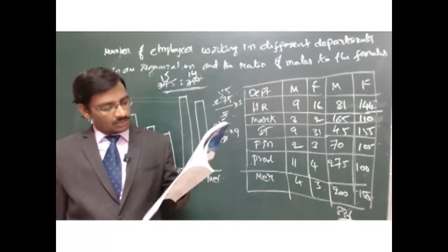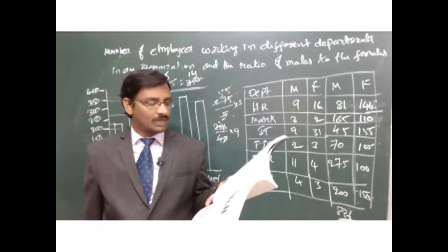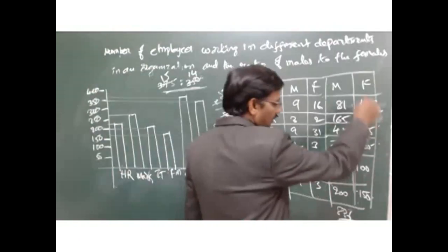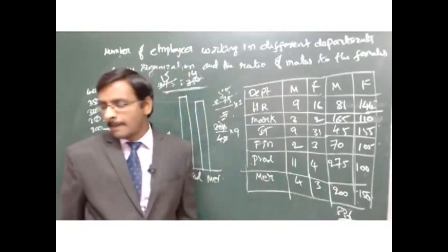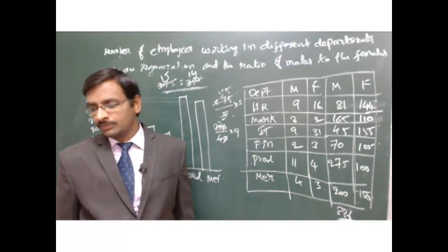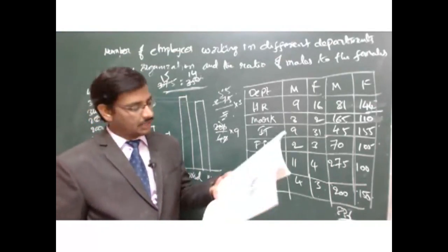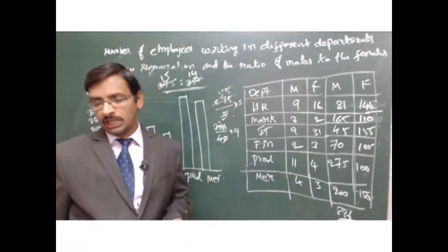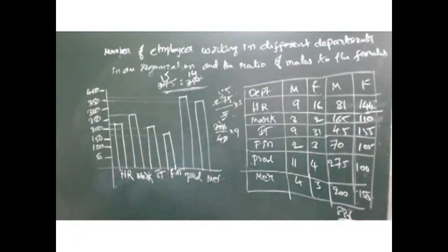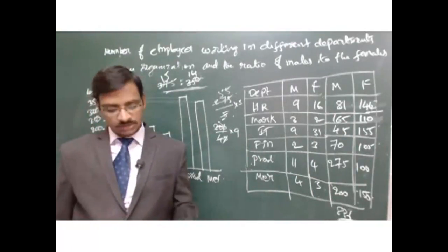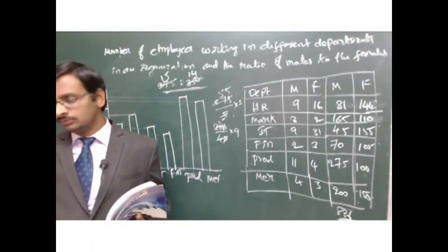What is the total number of employees from all the departments together in the organization? Total number of employees from all the departments together is 1600. Total number of employees: 1600. Okay, great.